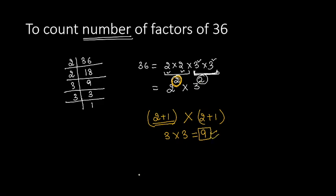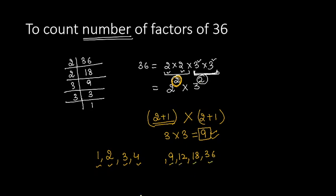Let's verify by listing the factors of 36. The number 1 and the number itself are always factors. Next, 2 times 18 is 36, so 2 and 18. Then 3 times 12 is 36. Then 4 times 9 is 36. Counting so far: 1, 2, 3, 4, 5, 6, 7, 8. The missing factor is 6 times 6, which is the 9th factor. So the total number of factors of 36 are 1, 2, 3, 4, 5, 6, 7, 8, and 9 — a total of 9 factors.